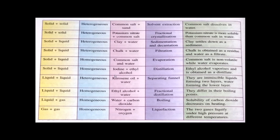For a solid-liquid homogeneous mixture — iodine and ethyl alcohol — distillation is the process. Ethyl alcohol will form vapor and can be obtained as distillate, whereas iodine will remain in the container. For kerosene oil and water: as these are immiscible liquids, there will be two layers. Kerosene forms the upper layer as it is lighter, and a separating funnel is used. The principle is they form two layers, with water forming the lower layer.